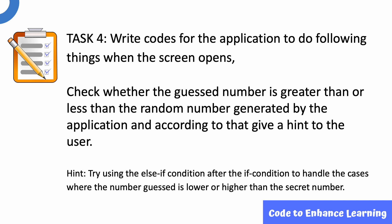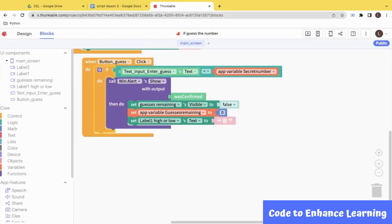In Task 4, we write the codes for the application to do the following things when the screen opens: we need to check whether the guess number is greater than or less than the random number generated by the application and according to that, we have to give a hint to the user. We will be using the else if condition after the if condition to handle the cases where the number guessed is lower or higher than the secret number in our project.